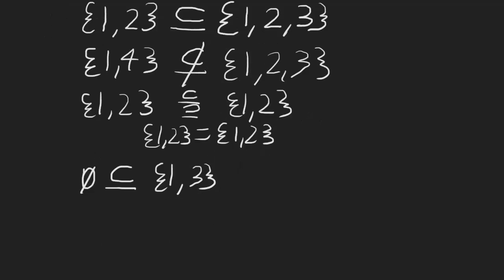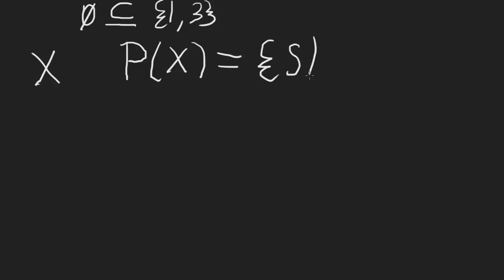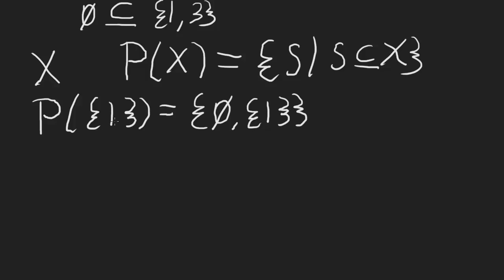Now we can get the power set. For some set X, the power set of X — notated as the power set of X — is the set of all subsets of X: the set of all S where S is a subset of X. For example, what is the power set of the set containing 1? That would be all subsets of {1}: the empty set is a subset of {1}, and so is {1} itself. Those are all the subsets, so the power set of {1} is {∅, {1}}.